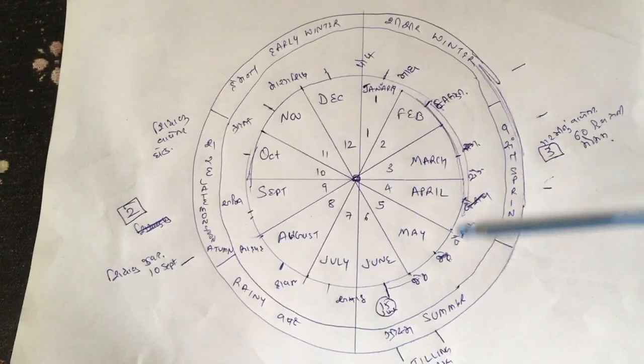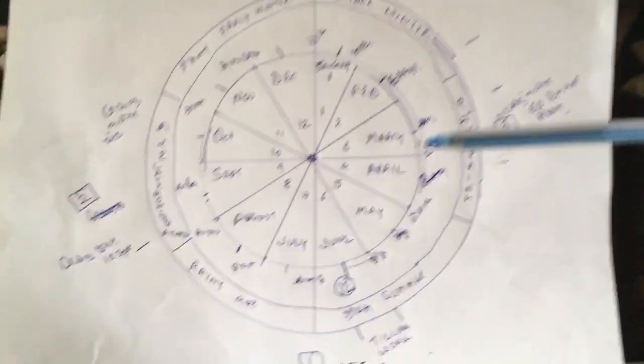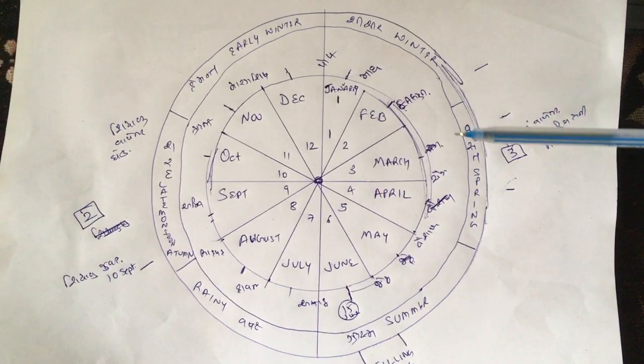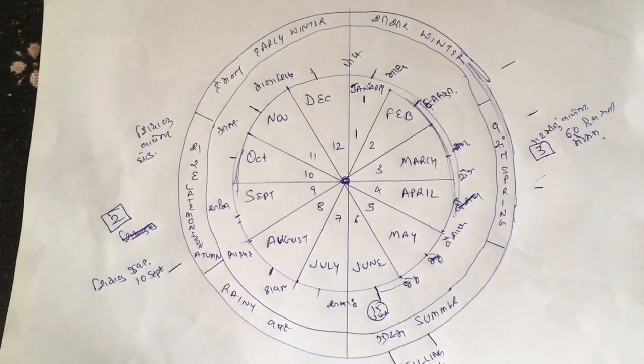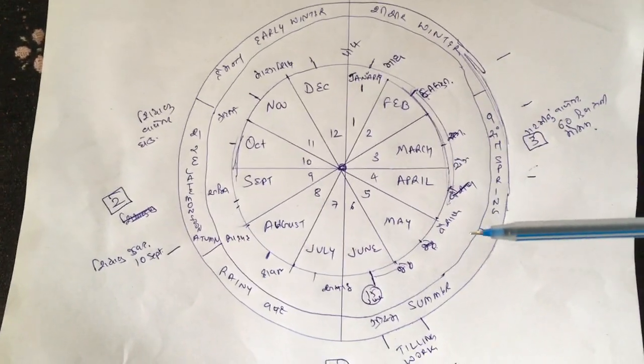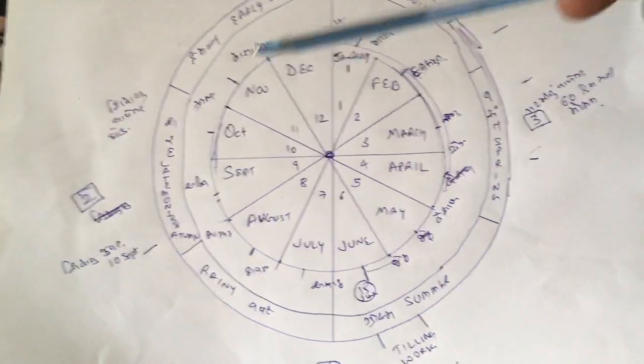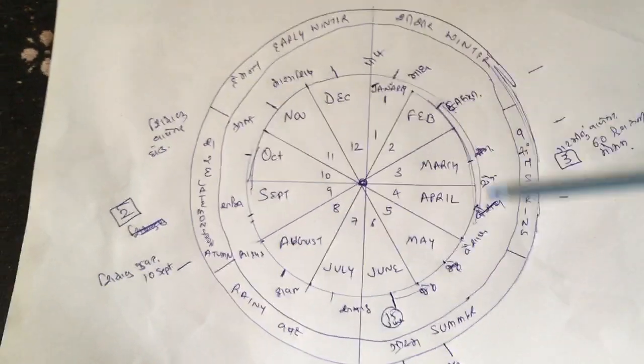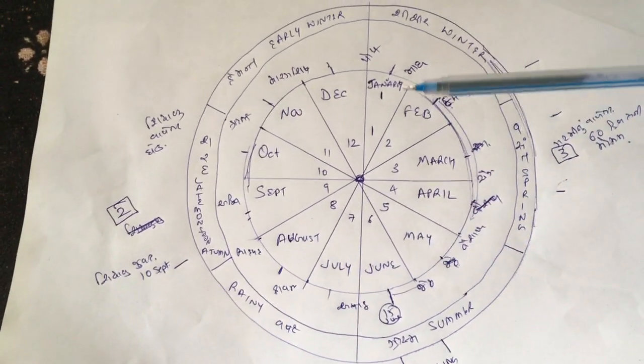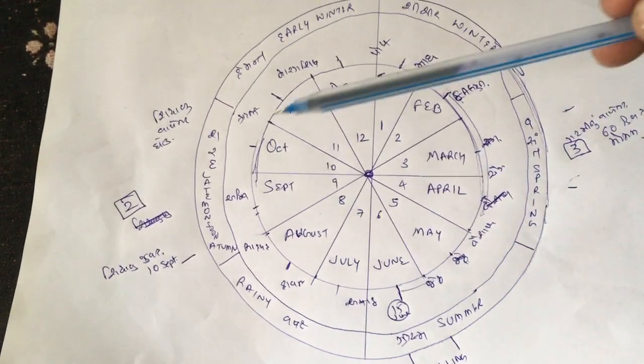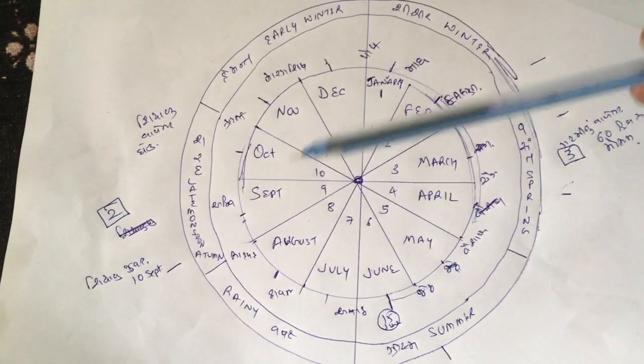The English calendar is a fixed calendar, but our calendar and our seasons run with nature. So these months do not correspond to the exact English calendar, but you've got to chart it out each year. That is your responsibility.